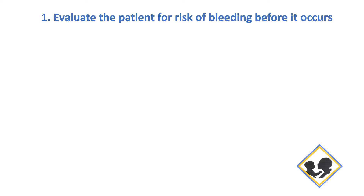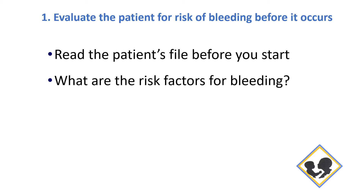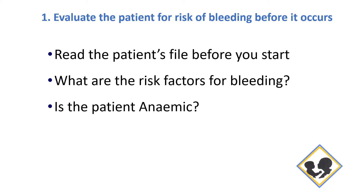It's important to specifically ask whether the patient booked for caesarean section is at increased risk of perioperative bleeding. Evaluate this risk before it occurs. This means reading the patient's file before you start, asking what the risk factors are for bleeding, checking whether the patient is anemic. Ideally we treat this at antenatal level in the clinics, but if the patient comes anemic to theater, they're at increased risk for bleeding. Look at the staff competencies you have available and have your experienced, skilled people in the room for high-risk patients.